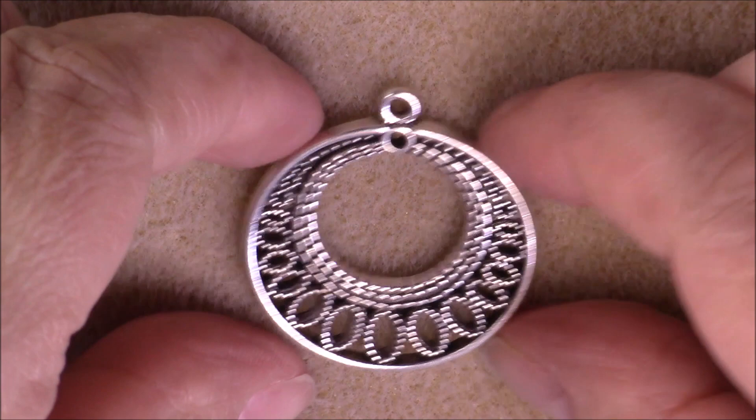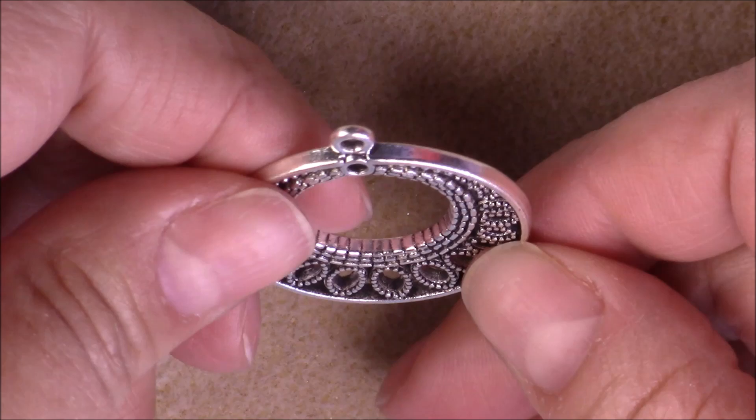And number three. Number three is a 36x32mm filigree style round pendant. There we go, that's the back. And number one. One is a one-meter 3mm steel roller jewelry chain, and there you go.